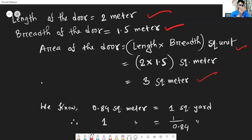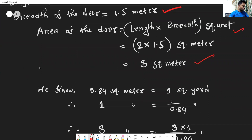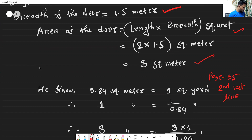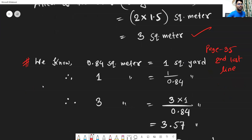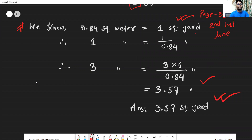The question requires the answer in square yards. From your academic book, page 35, second last line, we get the relationship: 0.84 square meter equals 1 square yard. Using this, we convert square meters into square yards. So 3 square meters, when divided by 0.84, gives us — using a calculator — 3.57 square yards.